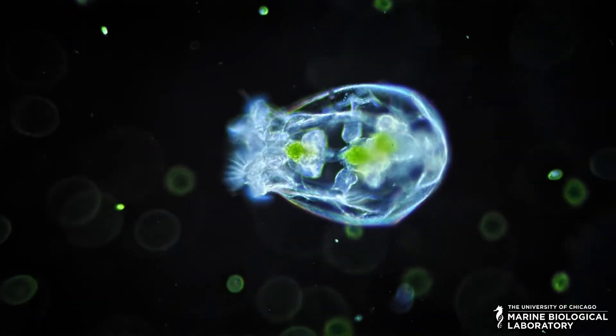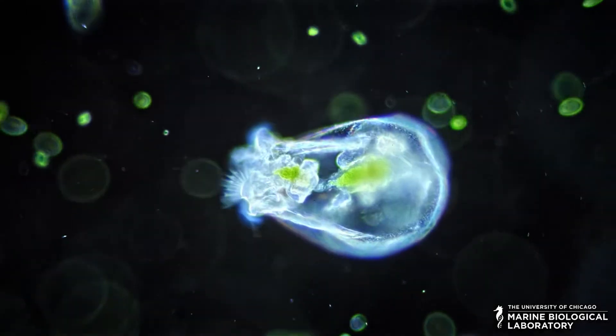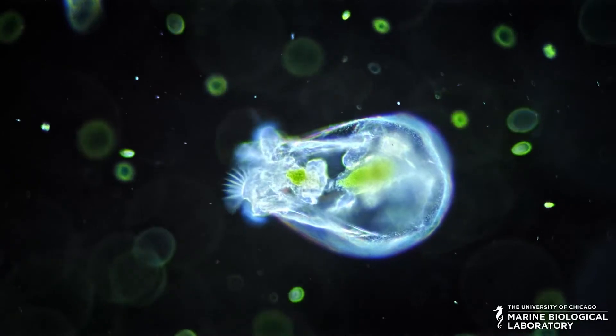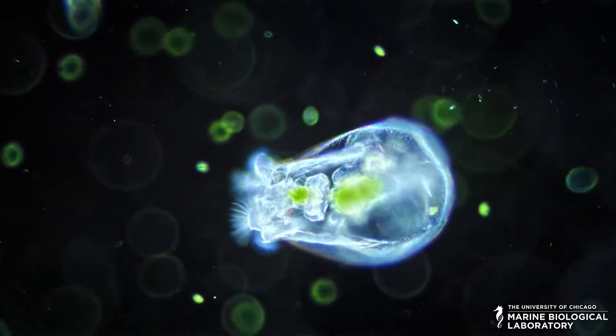Rotifers are microscopic aquatic animals found all over the world. Their name comes from their distinctive crown of cilia which can look like rotating wheels and are used for swimming and feeding.